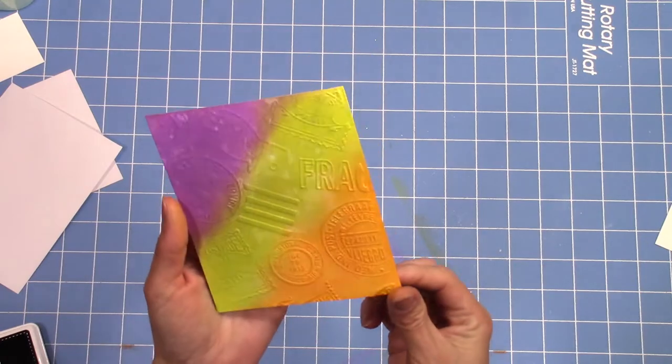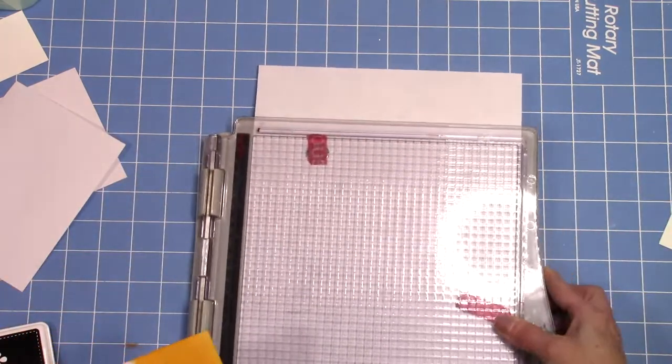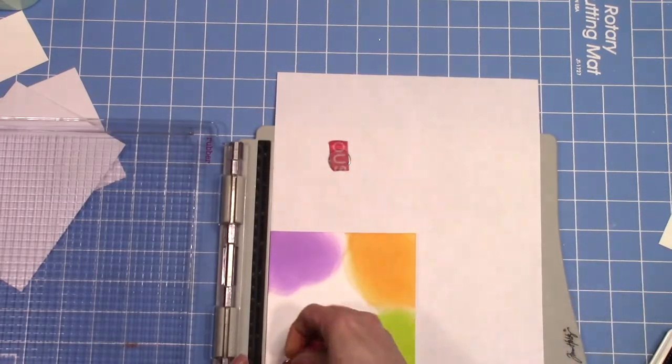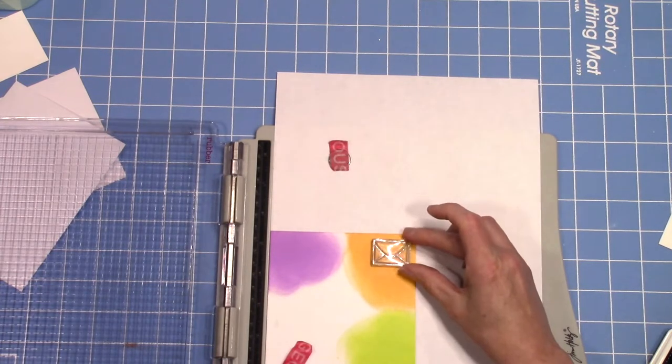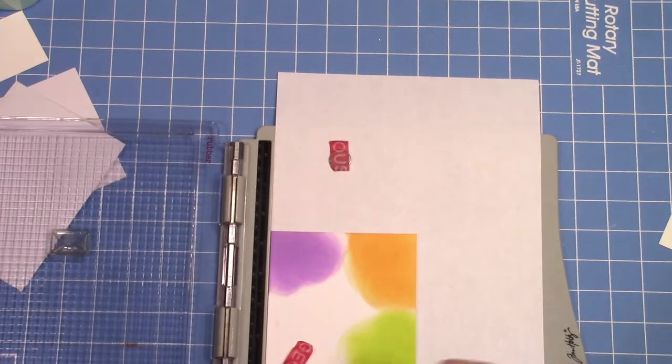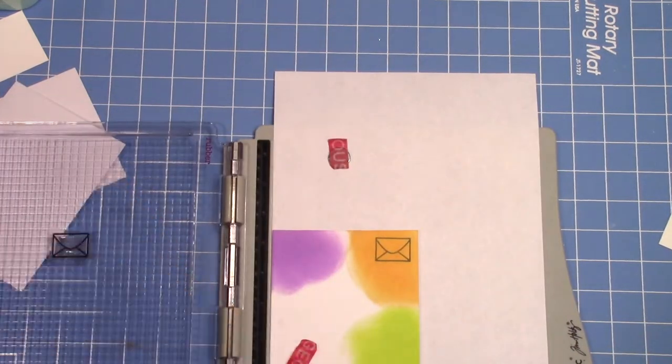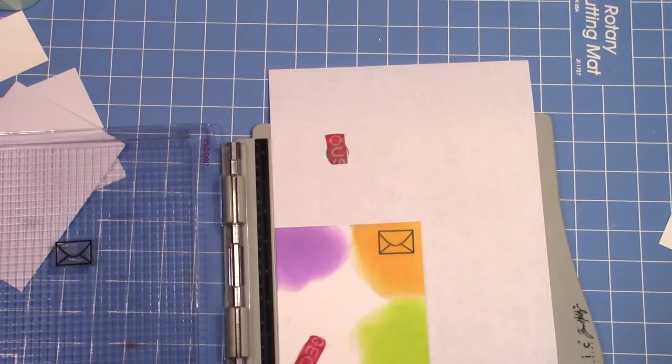Super cute, goes really well with my little set right here. I also just threw some on another scrap piece of Bristol smooth and I'm going to stamp the inside of the It's in the Mail, this cute little letter stamp. I'm going to stamp that out three times on each one of the colors and then we're going to fussy cut those out later as part of the embellishments for our card.